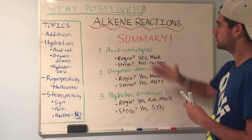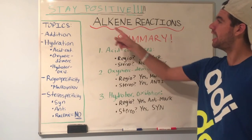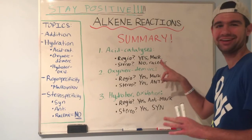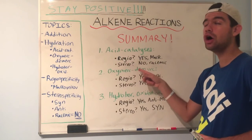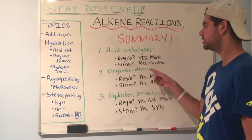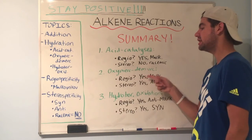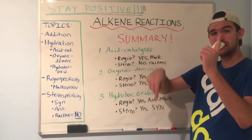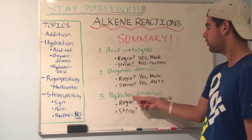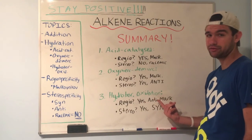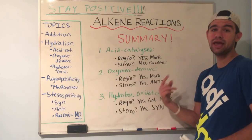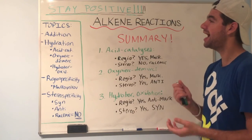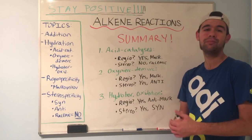To conclude with a summary: acid-catalyzed hydration of alkenes — regiospecific? Yes, follows Markovnikov's rule. Stereospecific? No, because we get a racemic mixture. Oxymercuration-demercuration — regiospecific? Yes, follows Markovnikov's rule. Stereospecific? Yes, involves anti-addition — the H and OH must be anti to each other. Hydroboration-oxidation — regiospecific? Yes, but anti-Markovnikov. Stereospecific? Yes, the H and OH must add syn to each other, on the same side. That's hydration and an intro to alkene reactions. I know it's a lot, but I really hope that helped.